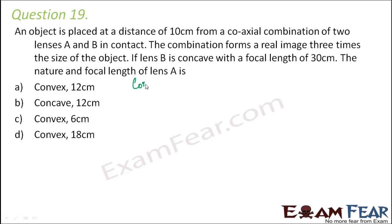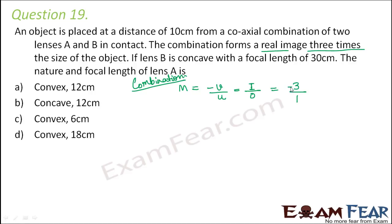Let us talk about the overall combination and forget about the individual lenses for now. Overall, the combination forms a real image which is three times the size of the object. So magnification is equal to minus V by U, which equals height of image by height of object, equal to 3. Since it is a real image, the image is also inverted, so we get V = 3U. The object is placed at a distance of 10 cm, so U = 10 cm, giving V = 30 cm. The image is formed at 30 cm from the combination.